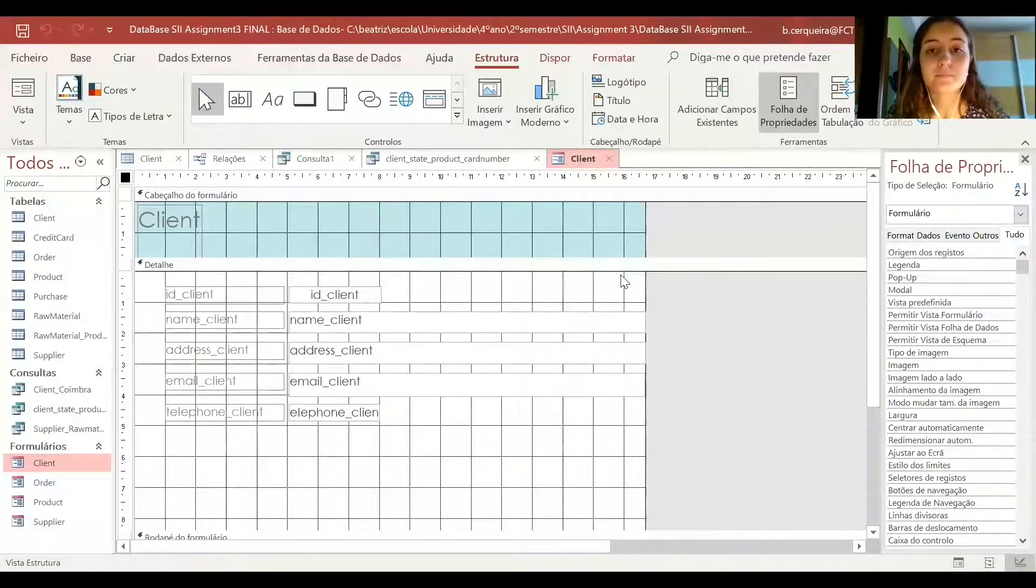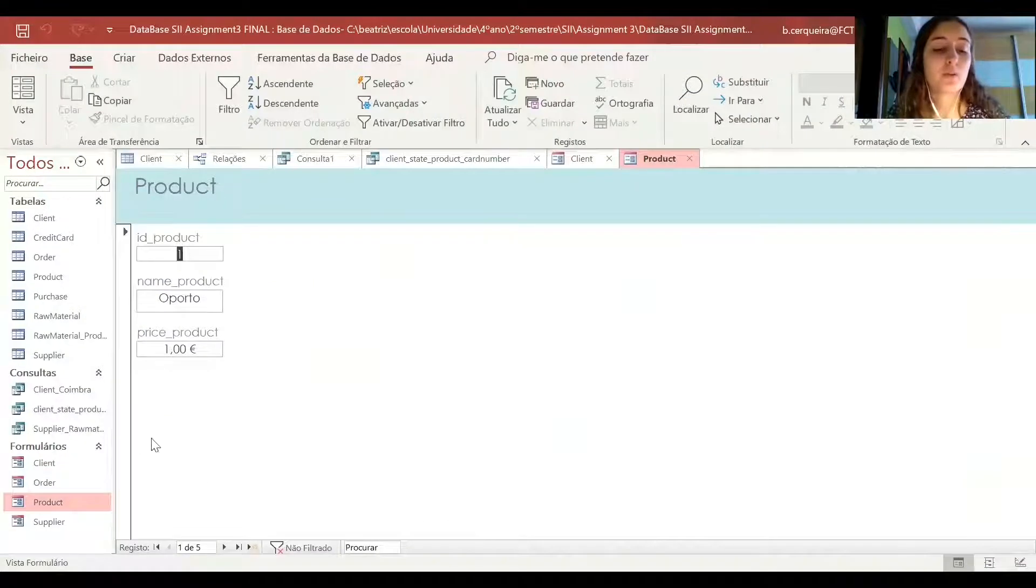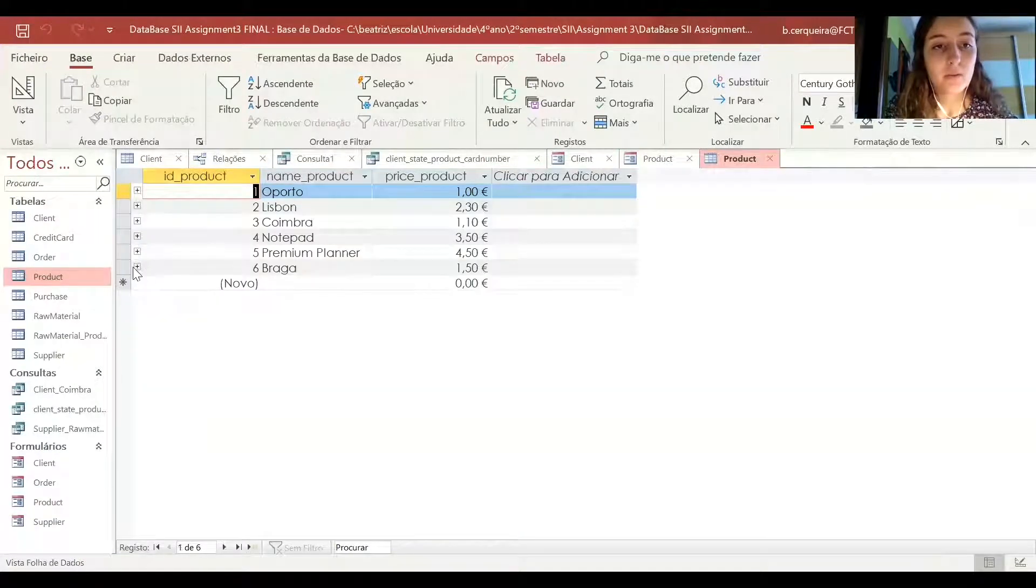For example, in here in the product, if I want to create a new product but I don't want to go to the table, I'm just gonna give it a name and a new price, for example, and that's it. Then I go to the products table and it's already here.